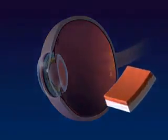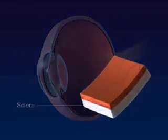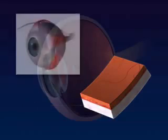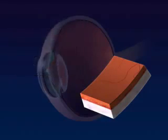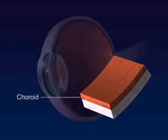The sclera is the outer white layer that maintains the shape of the eye. Muscles attached to the sclera control eye movements. The choroid is the middle layer that contains the blood vessels.